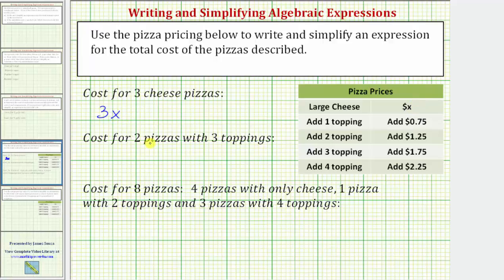Next, we want the cost of two pizzas with three toppings. Let's first find the cost of a pizza with three toppings. For a pizza with three toppings, we must first purchase a cheese pizza for x dollars, and then add $1.75 for the extra three toppings. And therefore, the expression x plus 1.75 would be the expression for the cost of one pizza with three toppings.